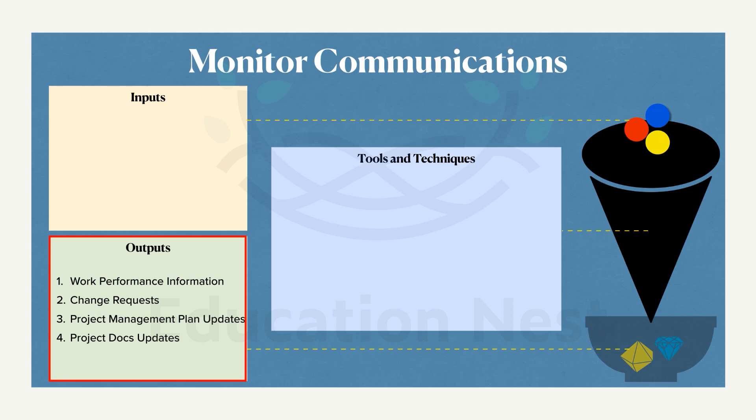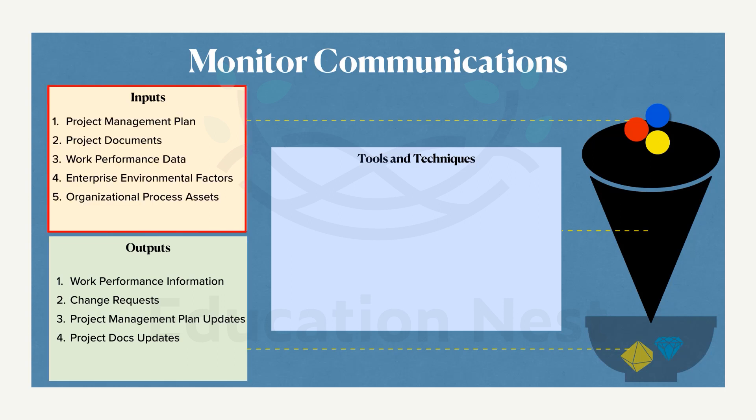These are things I keep repeating — just keep them in the back of your mind. For inputs, the project management plan is referred. Specifically, we can make use of the resource management plan and the stakeholder management plan. Don't limit these to just the options I've given; other components can also be used. Project documents like the issue log, project communications, and lessons learned register. These are the same processes and activities repeated in almost all communications. There are also enterprise environmental factors and organizational process assets, which are available by default in almost all processes.